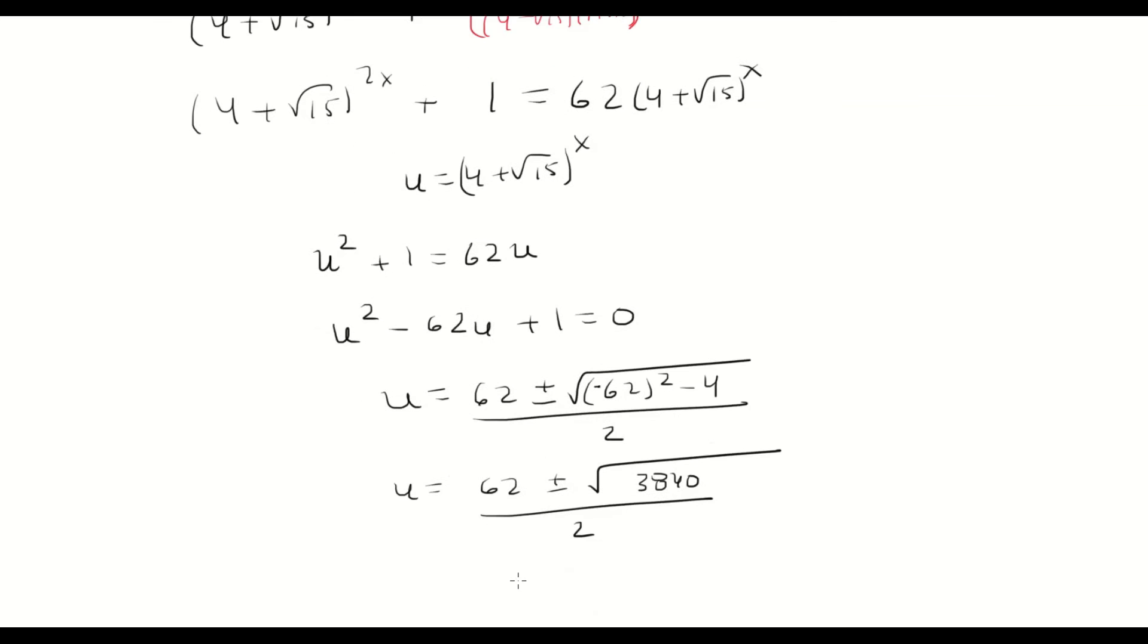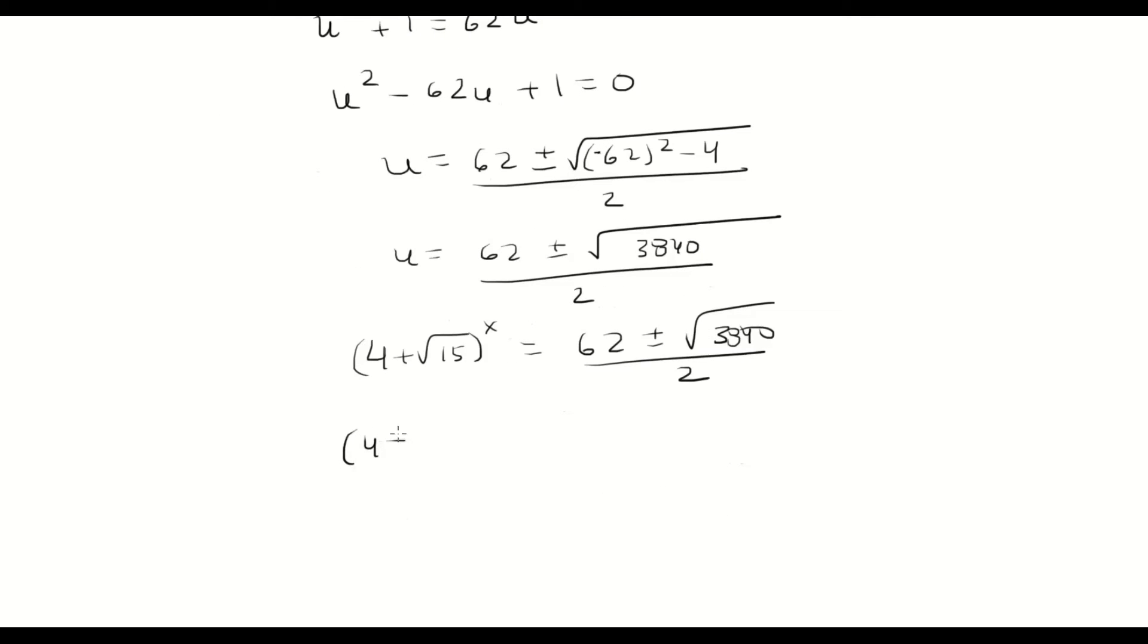But remember u was (4 + √15)^x. So now continuing this, we can simplify the square root of 3840 as 256 times 15, and then square root of 256 is 16 and then we'll leave the square root of 15 inside.